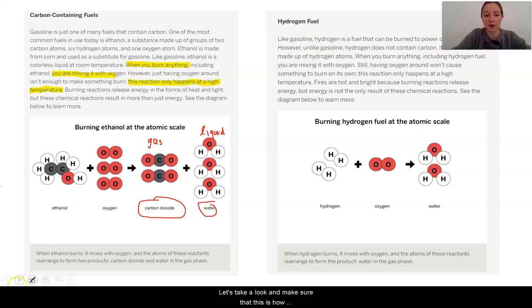Let's take a look and make sure that this is how hydrogen fuel works as well. Like gasoline, hydrogen fuel is a fuel that can be burned to power cars and buses. However, unlike gasoline, hydrogen does not contain carbon. It is a substance made of hydrogen atoms. When you burn anything, including hydrogen fuel, you're mixing it with oxygen. So again, we want to get our pen here, you are mixing it with oxygen, just like before. Still having oxygen around won't cause something to burn on its own. This reaction only happens at high temperature.